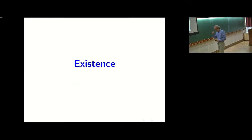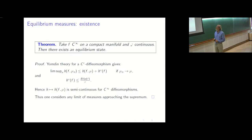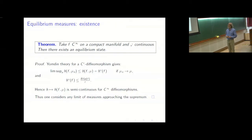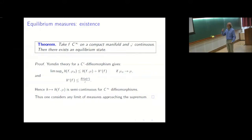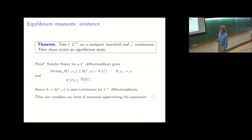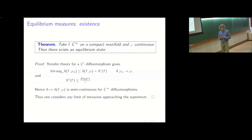Now let me go to the results about existence. For existence I mentioned the result of Newhouse — this is a direct generalization. Consider a map that has to be C^∞ and a potential that is continuous; then there always exists an equilibrium state. The proof is very short once you know Yomdin theory. If the map is C^r, the entropy is in general not continuous, not even semi-continuous: if you take the limsup of the entropy and compare it to the entropy of the limit measure there may be a gap.